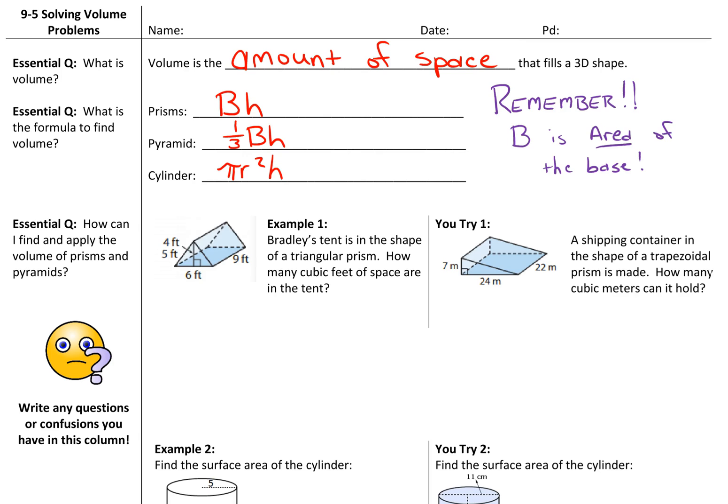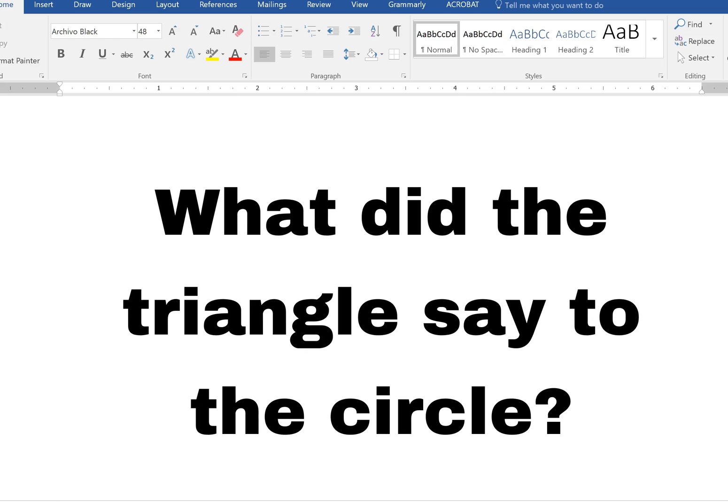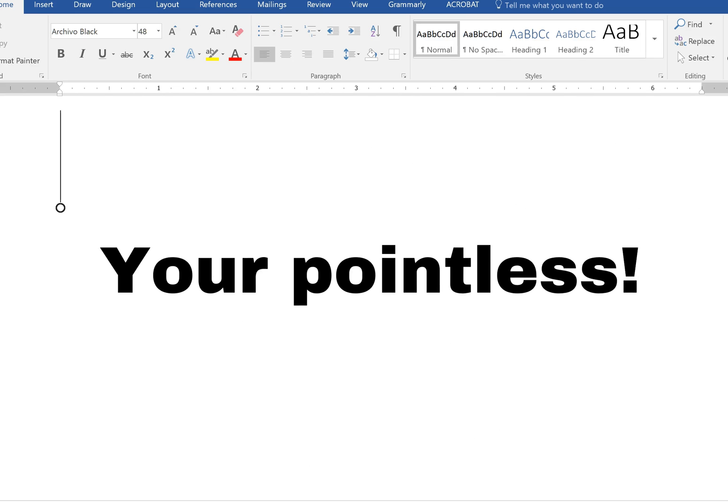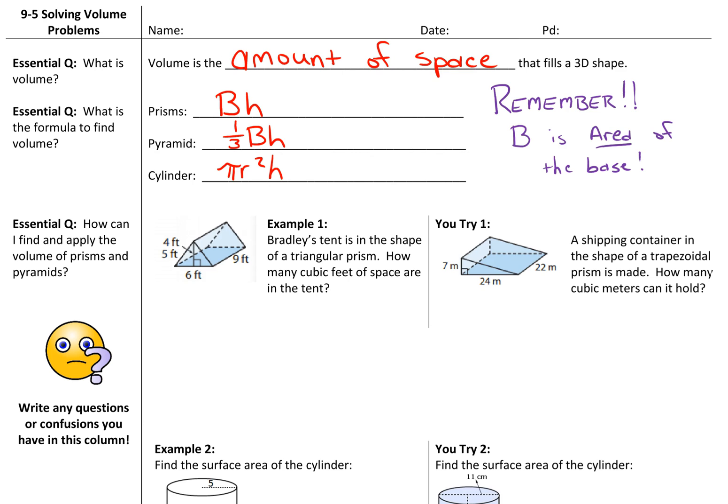Alright, for our last section of geometry, we're going to move on and talk about volume and how to find the volume of different prisms, cylinders, and pyramids. Of course, before we start, we have to look at our dorky math joke. What did the triangle say to the circle? You're pointless, but I'm... Alright, so let's go and get started.